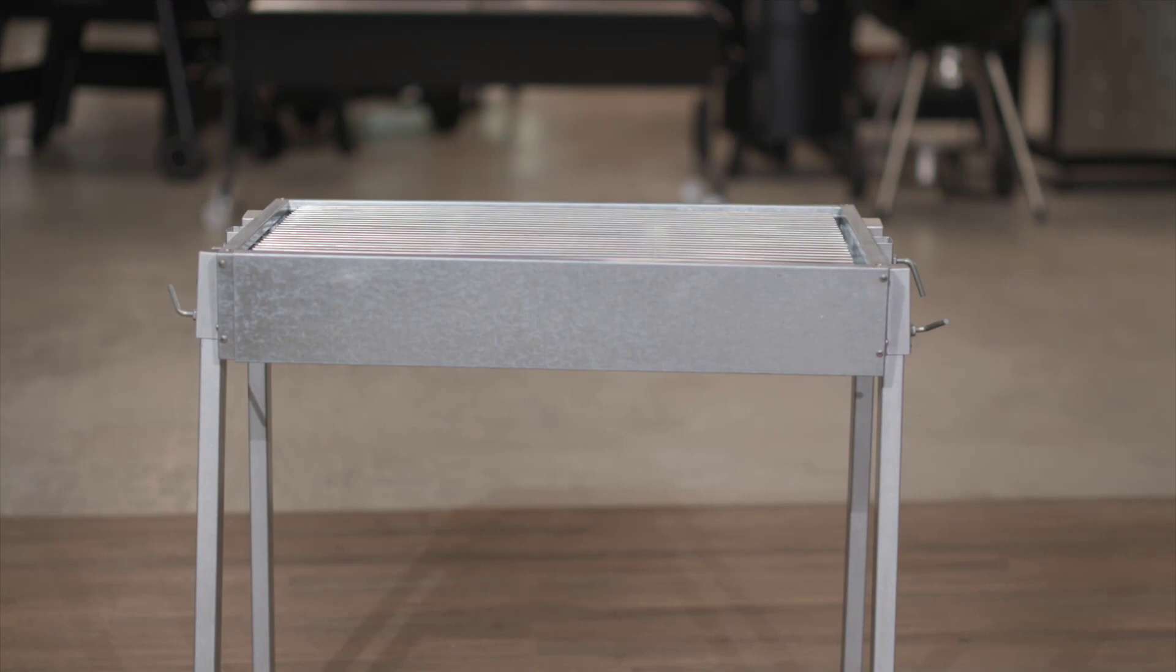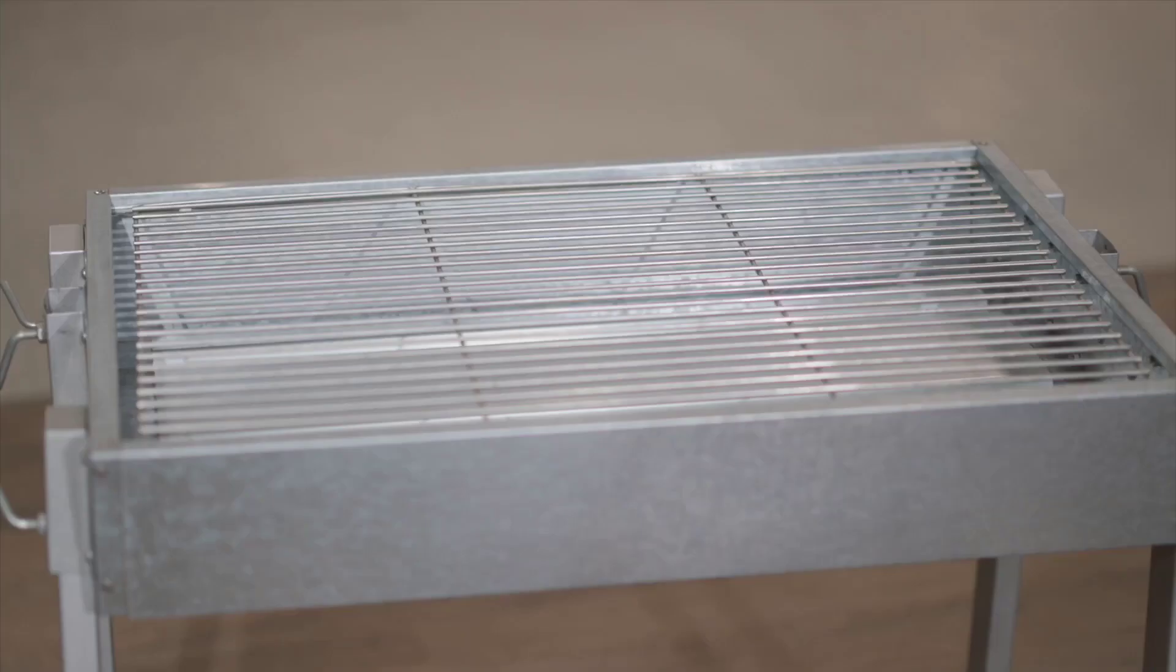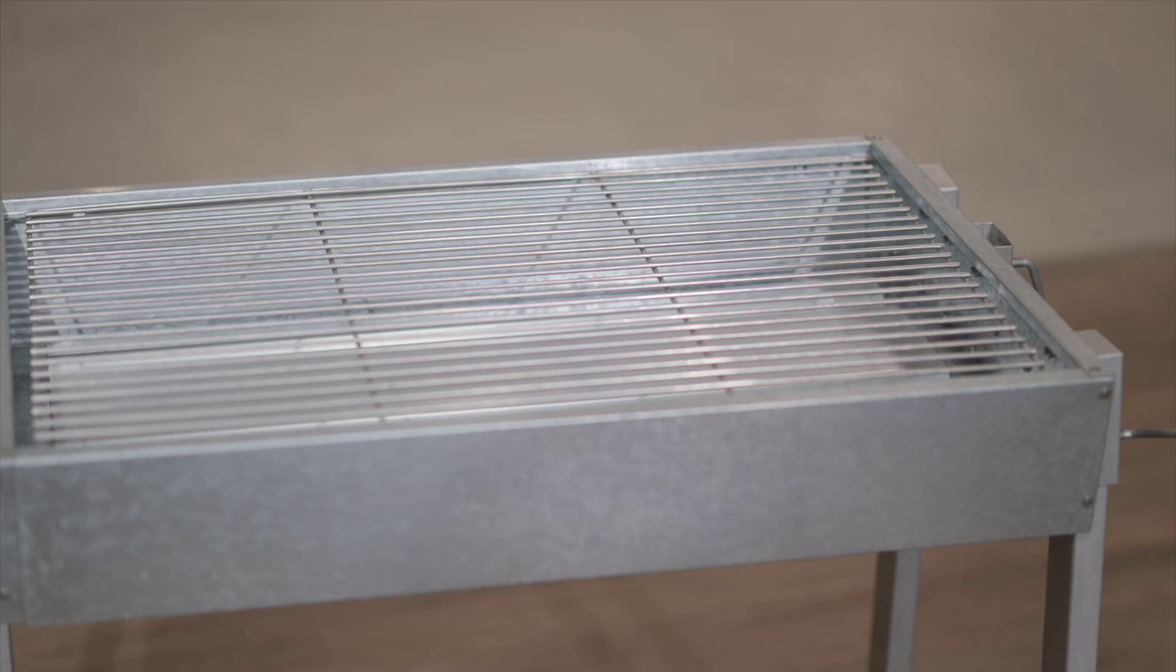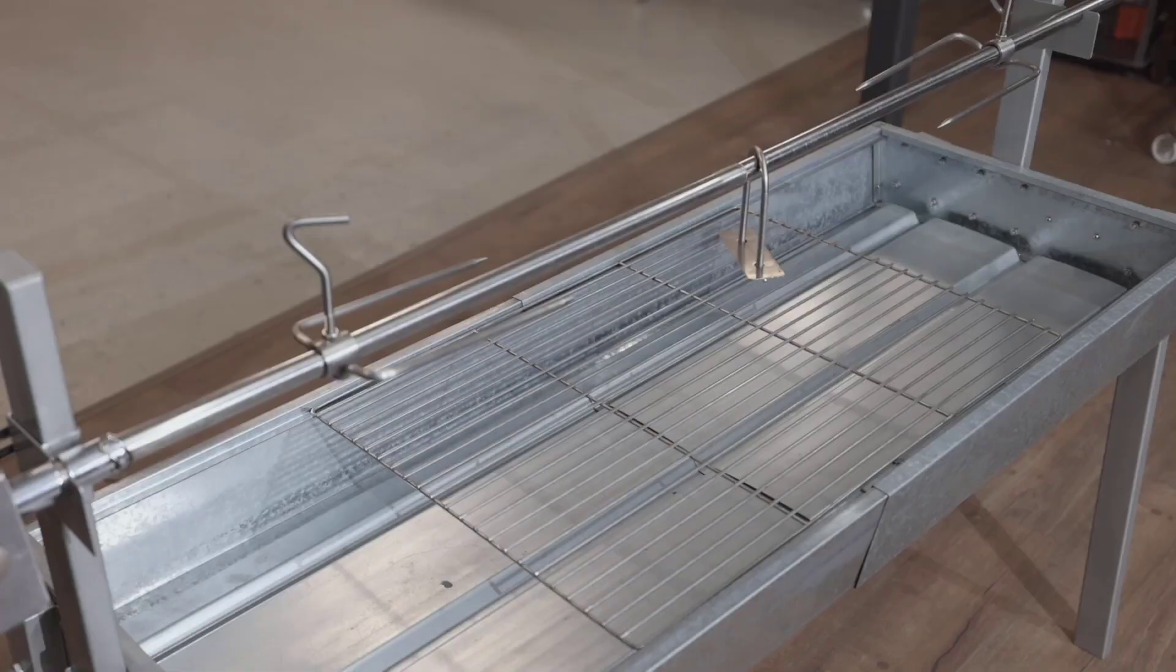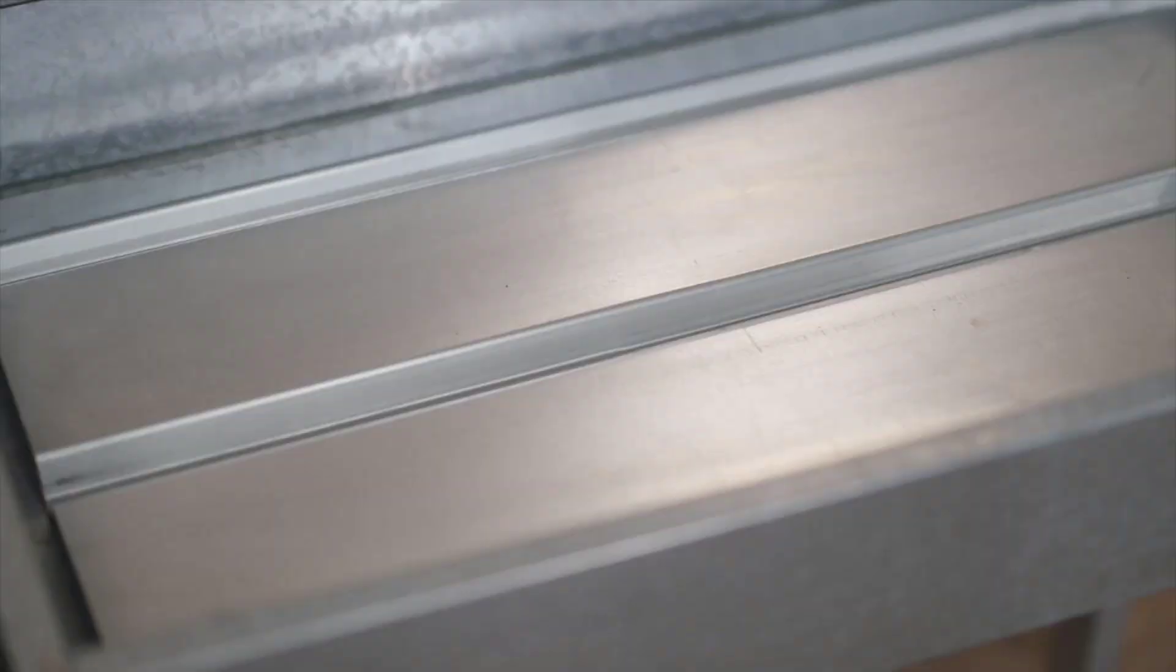In addition to the rotisserie function, the Extendable Spit Roaster also comes with a large cooking grill measuring 70cm by 48cm, which is perfect for grilling steaks, sausages, chicken wings or veggies. The grill sits 74cm from the ground so you won't be bending over breaking your back while grilling.